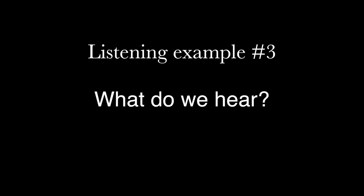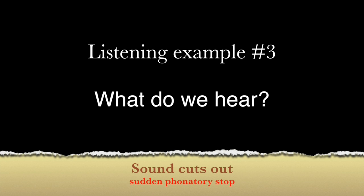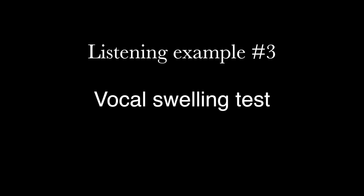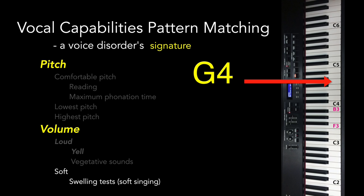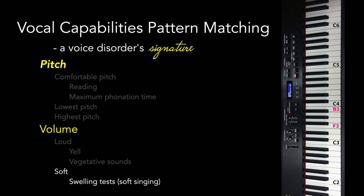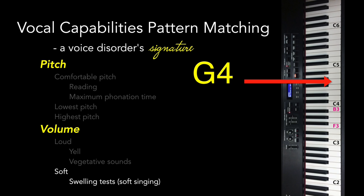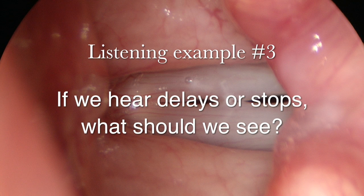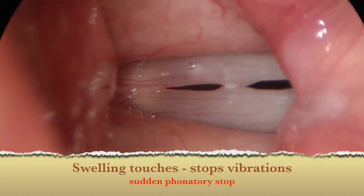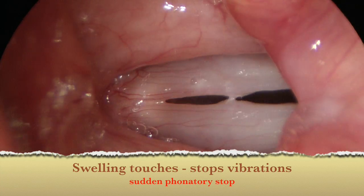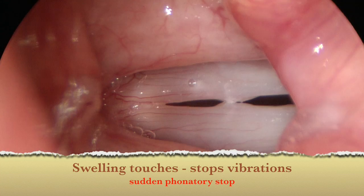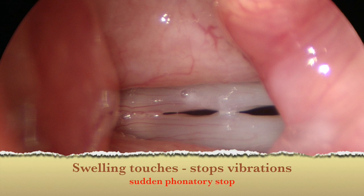Let's listen to low-volume sound production at a high pitch. There's a phonatory stoppage. By singing a few notes, we can determine the exact pitch where sound cuts out. But if the individual increases the volume, the note comes out clearly. This will correspond visually with stroboscopy. Increasing pitch by tightening the cricothyroid muscle brings the edges of the vocal cords closer together. Marginal swellings that touch at low volume stop vibrations.